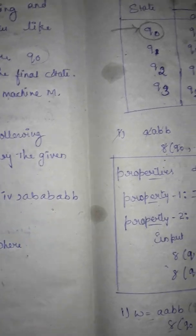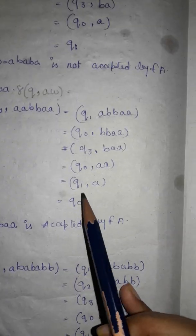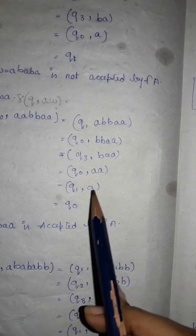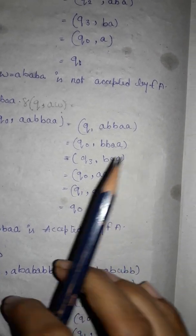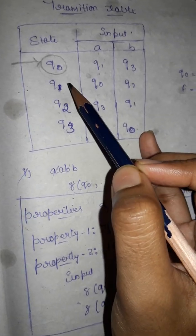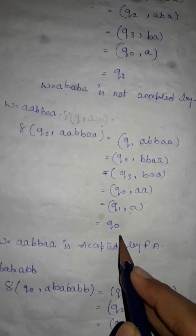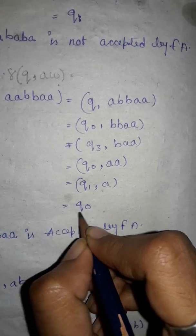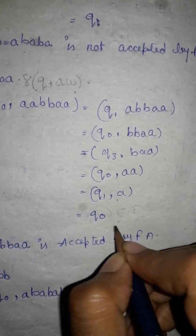q0 on a goes to q1, remaining string a. q1 on a goes to q0. We get q0, which belongs to the final state. So the string aabbaa is accepted by the finite automata machine.